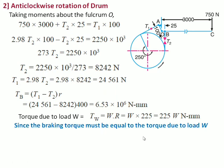So now the torque due to load W, as we know, it is 225 into W newton-mm. Since the braking torque must be equal to the torque due to load W, we need to equate TW and TB. Now substituting the values, 225 times W should be equal to 6.53 into 10 raised to 6. We get the final value of W equal to 29 kilonewtons for anticlockwise rotation of the drum.